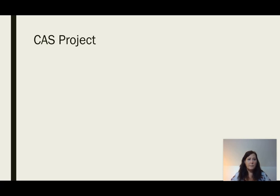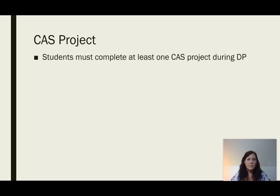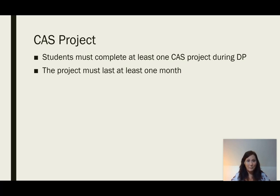Students must complete a CAS project, which can count towards their CAS hours. The project is meant to be a deliberately planned CAS experience — not something that happens in the moment, but something that is well thought out. Students must complete at least one CAS project during the diploma program, and the project must last at least one month, including the design and the implementation.